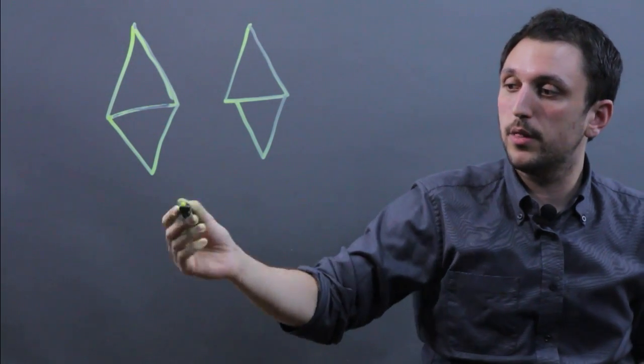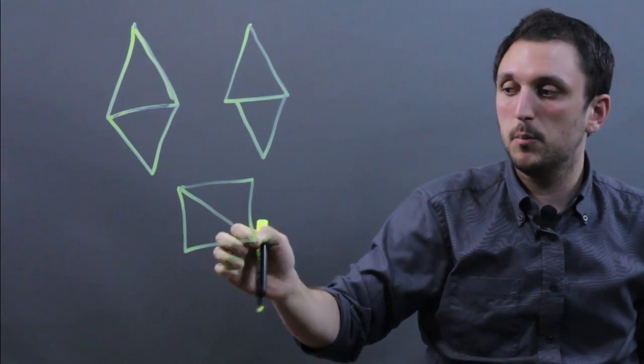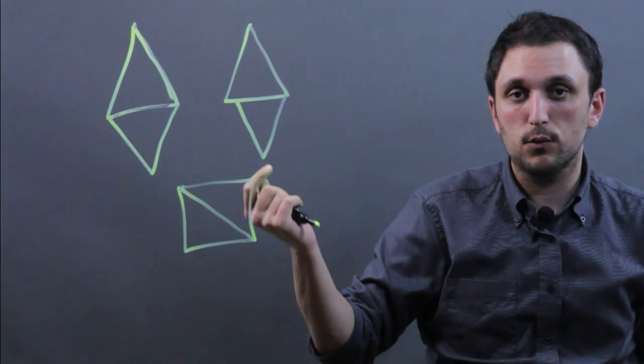Now, we can do this with multiple different quadrilaterals. You can have a square, for example, which is actually composed of two isosceles right triangles.